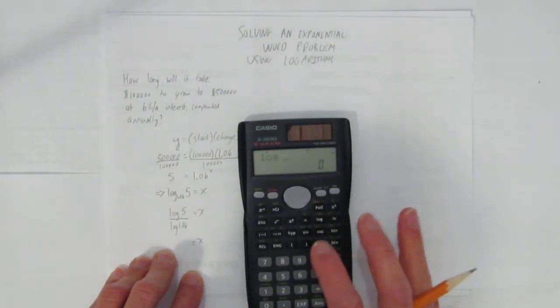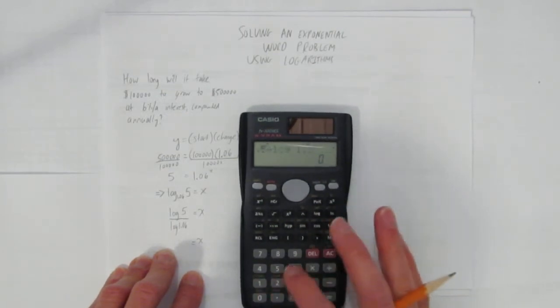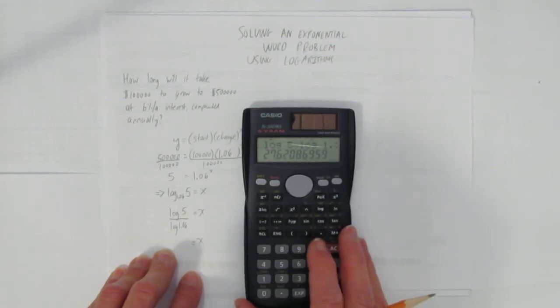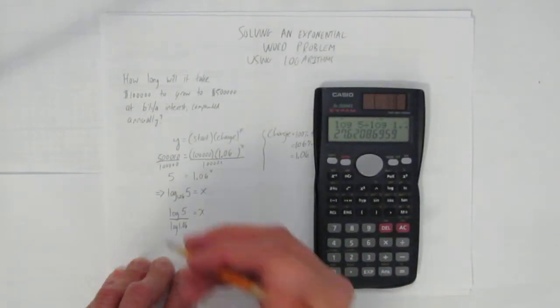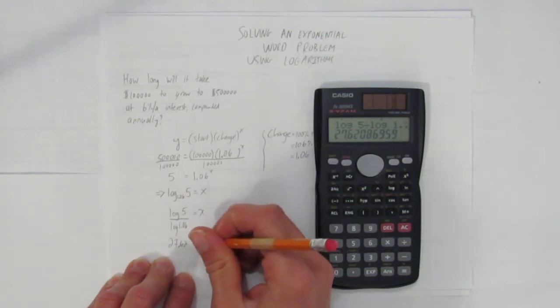What's the log of 5 divided by the log of 1.06, and I get 27, let's round it to two decimals, 27.62. And I need a rounding dot because I rounded.